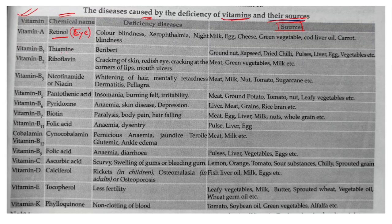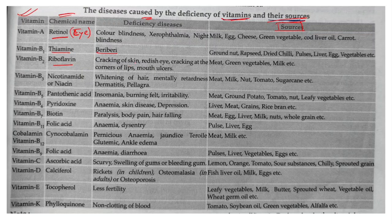Vitamin B1 — the chemical name is Thiamine and the deficiency disease is Beriberi. Sources include groundnut, rapeseed, dry chili, pulses, liver, and egg. Vitamin B2 — Riboflavin — causes cracking of the skin, eye problems, lip and mouth ulcers when deficient. These are caused because of lack of Vitamin B2.